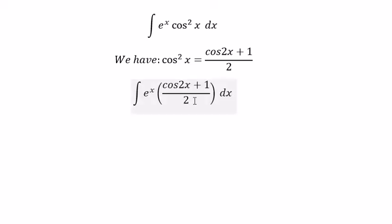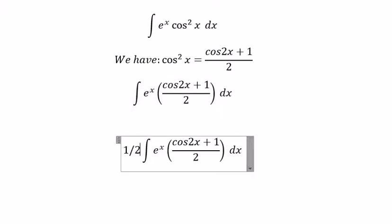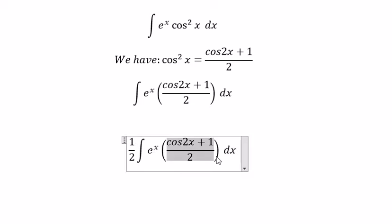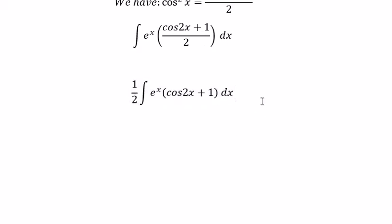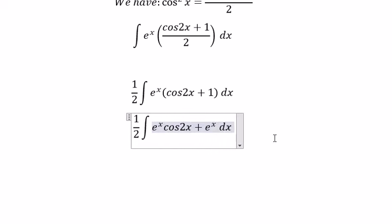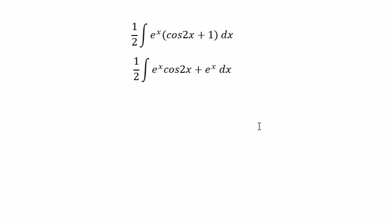Next we put number 2 outside. So we got e to the power of x cosine 2x and e to the power of x. The integral of e to the power of x you get e to the power of x.